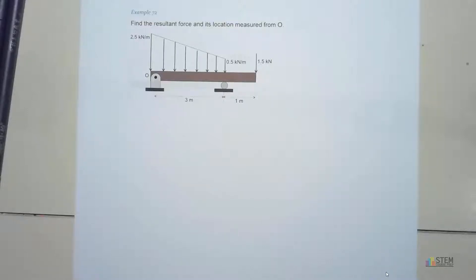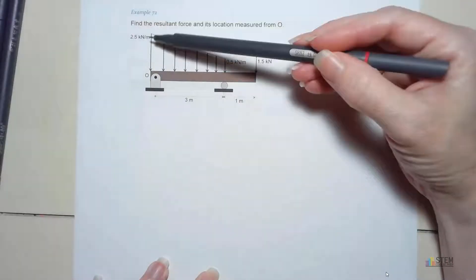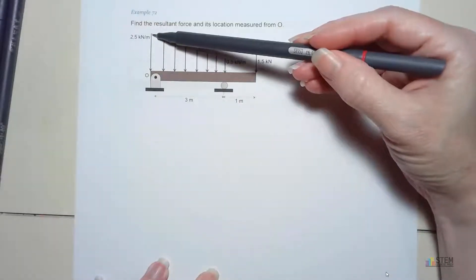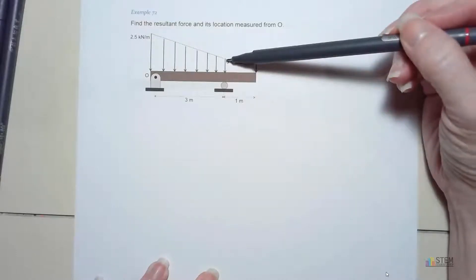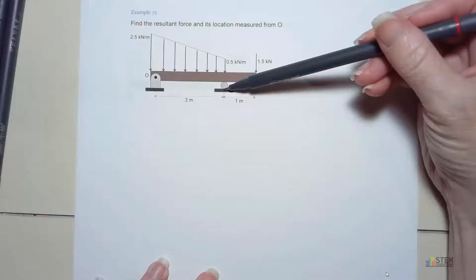Here's our first example for distributed loads. What we've got here is this problem. You'll see we've got this loading. It starts out at 2.5 kilonewtons per meter over here at the edge, and it ends up at 0.5 kilonewtons per meter over this roller here.